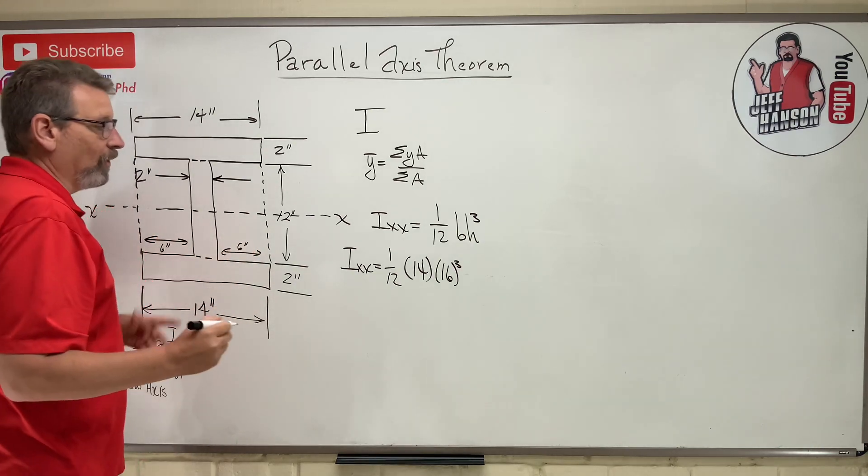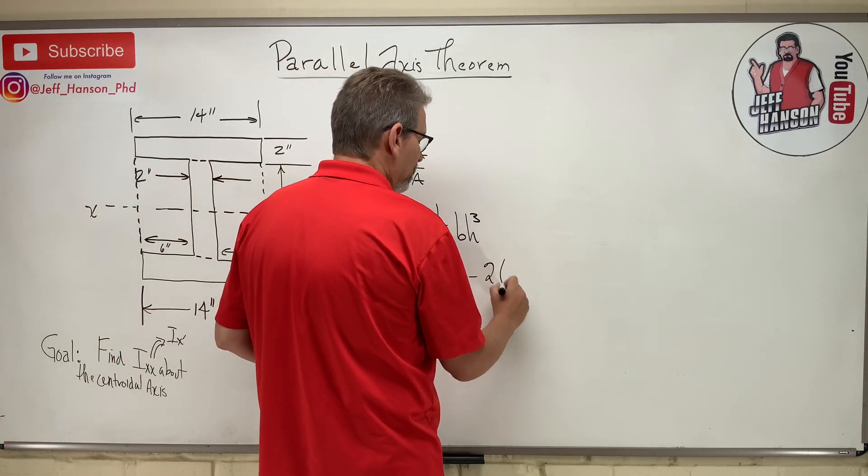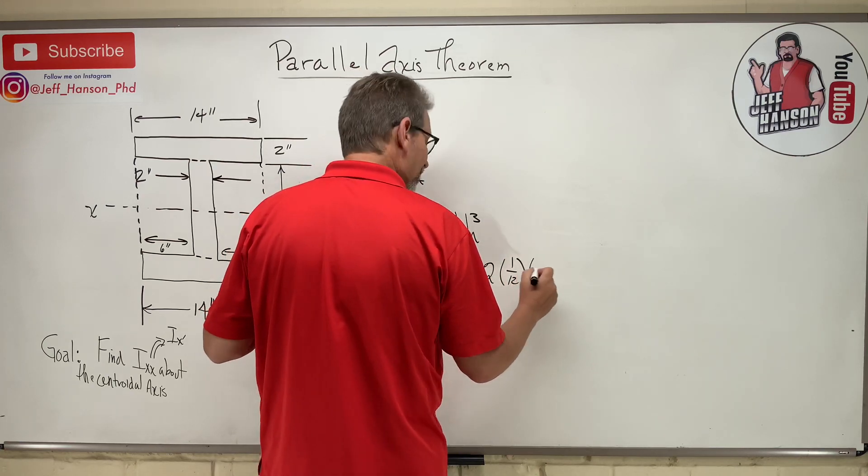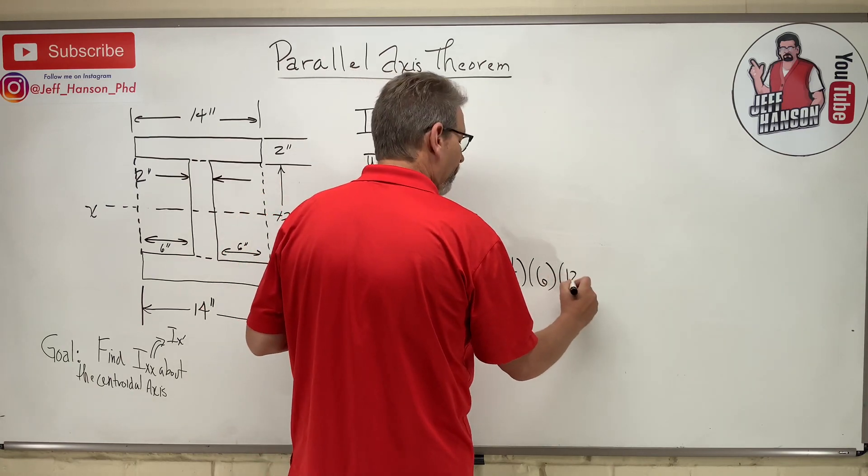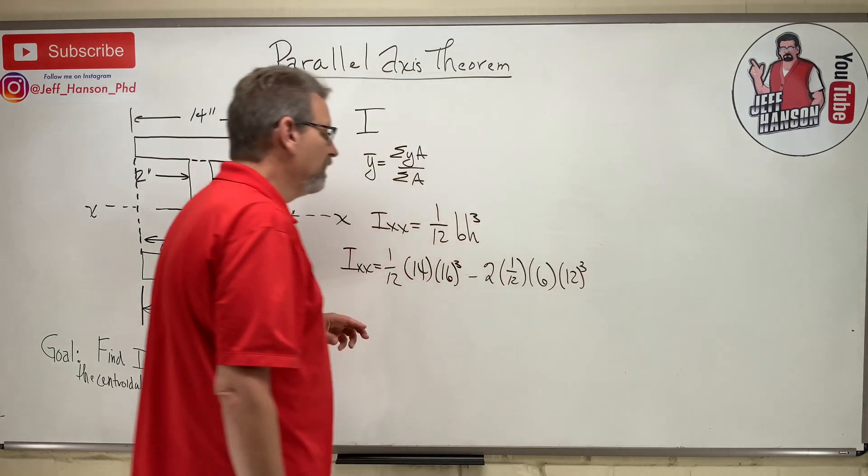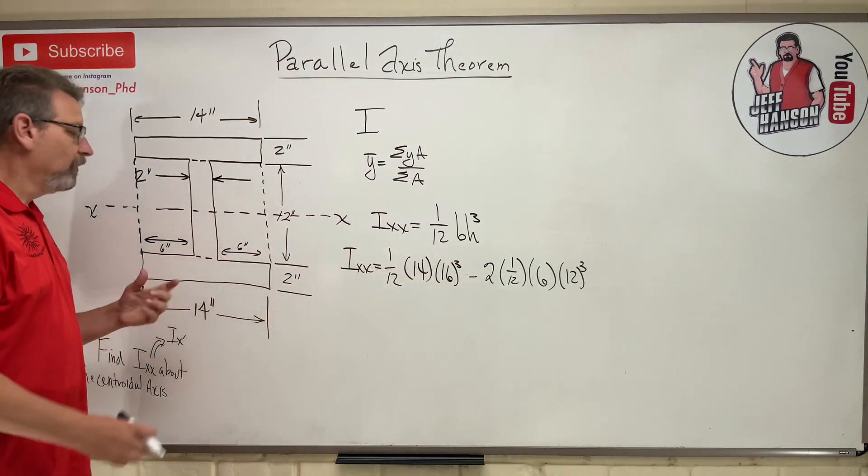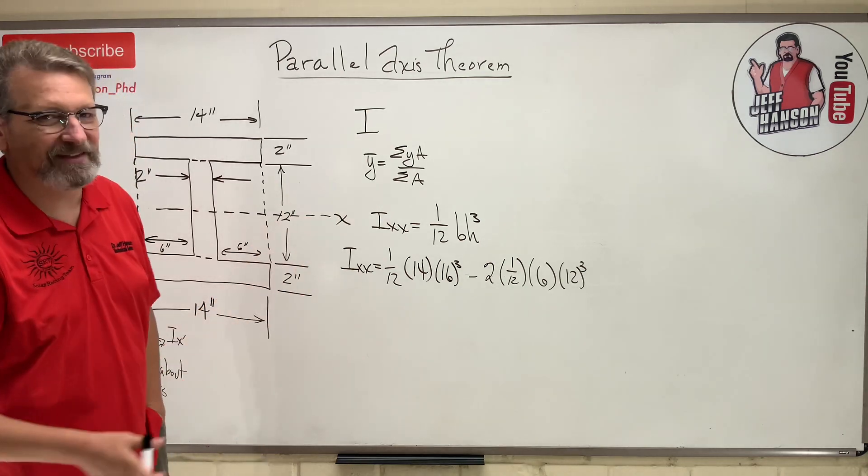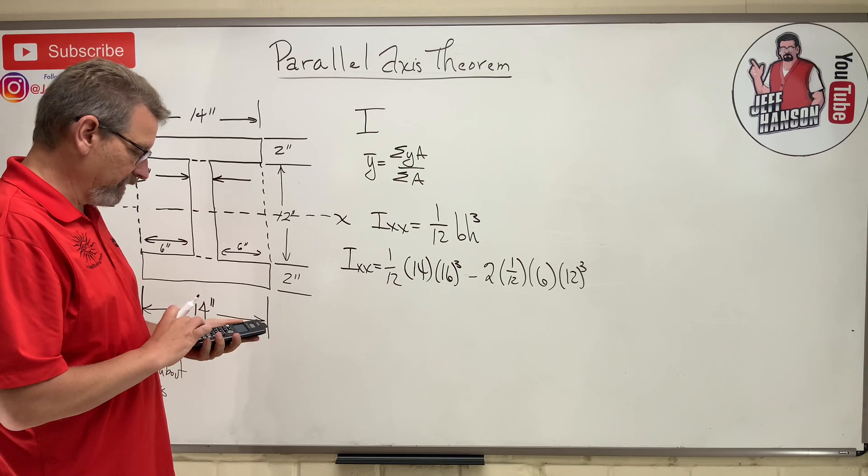So I could do this. I could do minus 2 times the base, 1/12. The base is 6 and the height is 12. You see where I could do that? I could do two of the little 6-inch windows, or I could have combined those and just done one 12-inch window. You would get the exact same thing, wouldn't you? So here we go. Let's go, calculator.